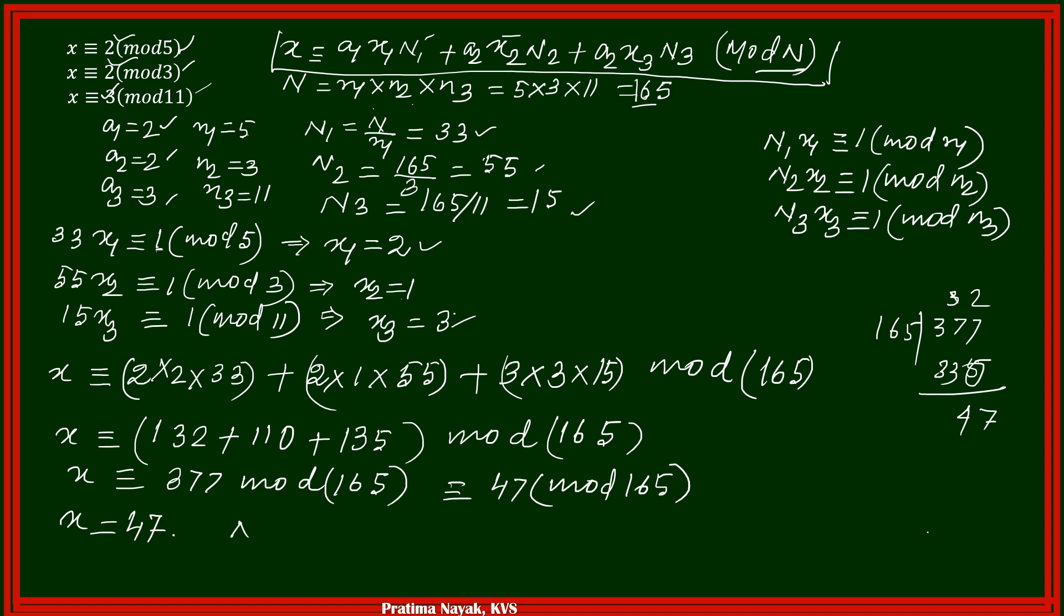So the number of ducklings, minimum number of ducklings, or smallest number of ducklings, is 47.